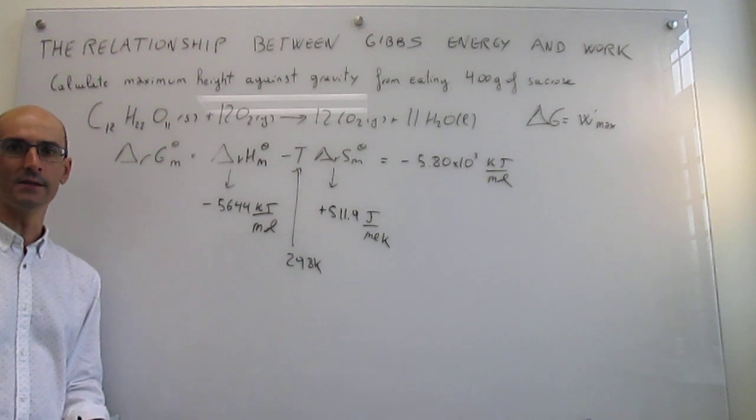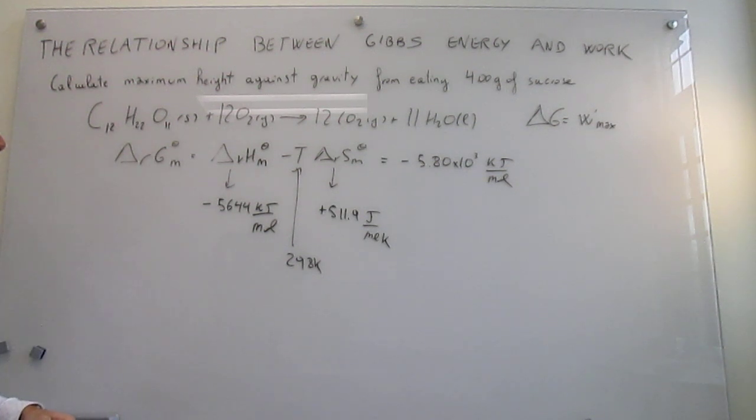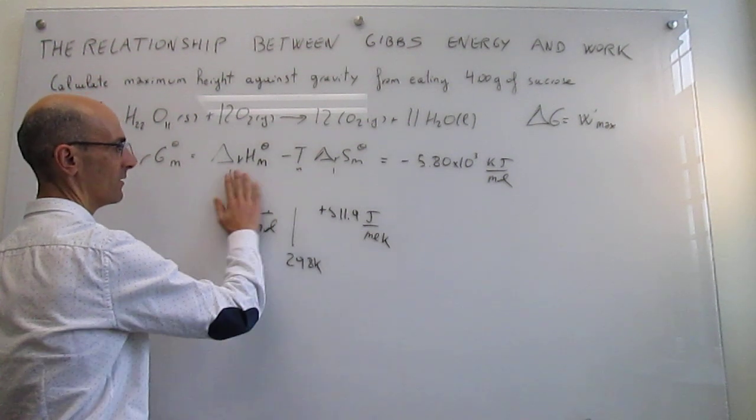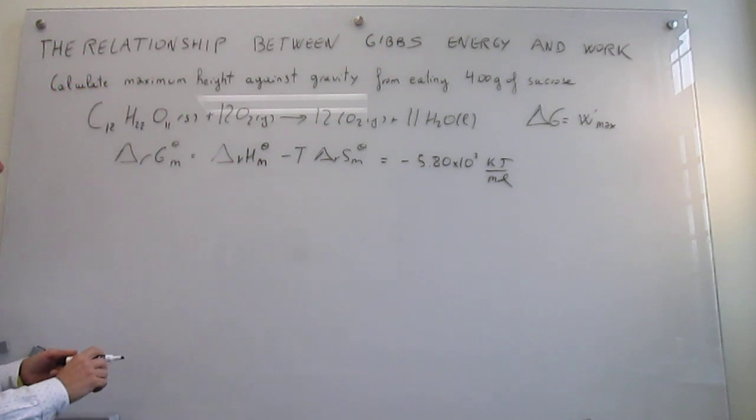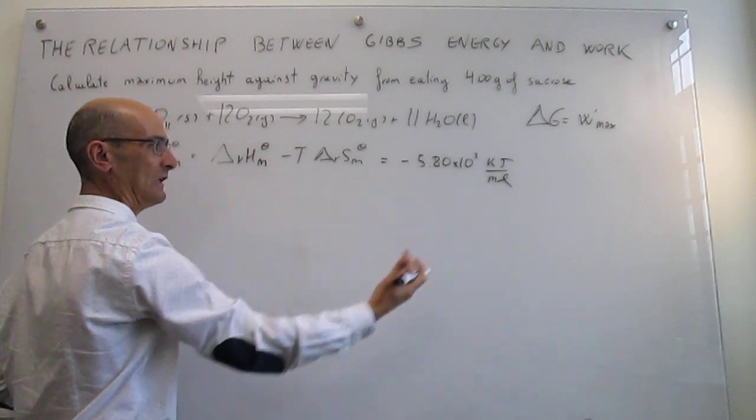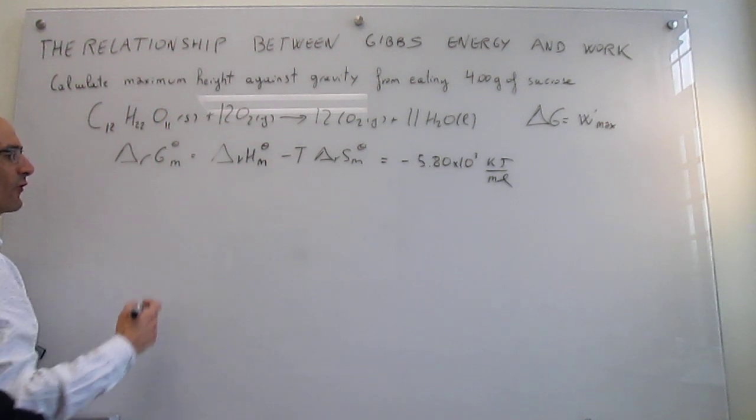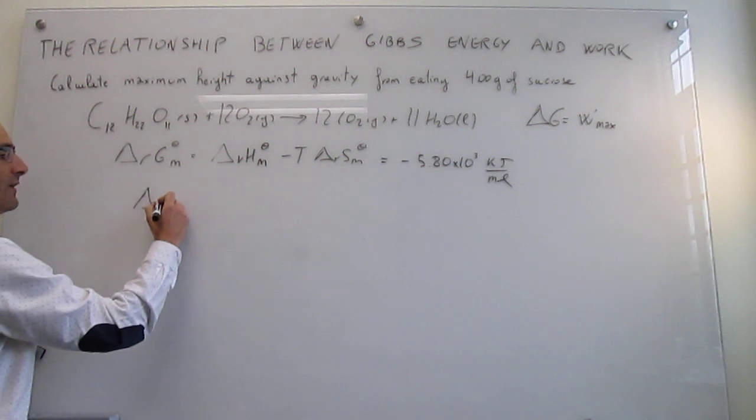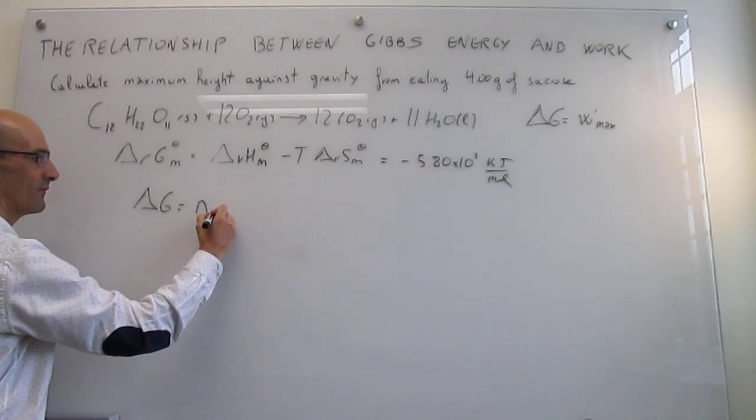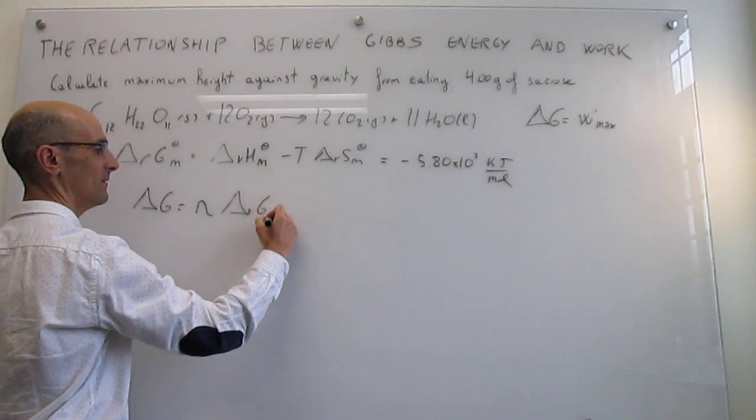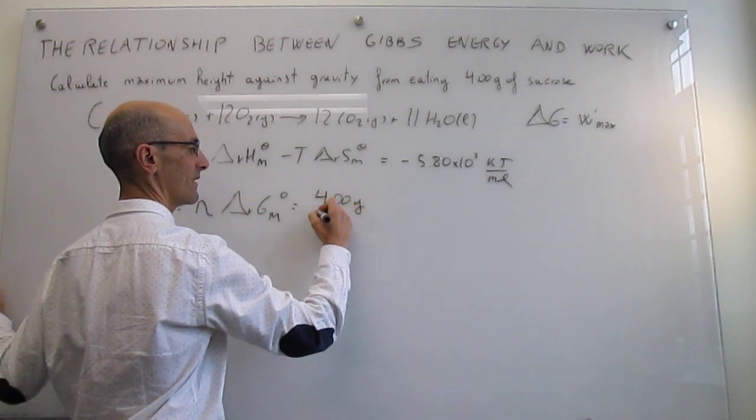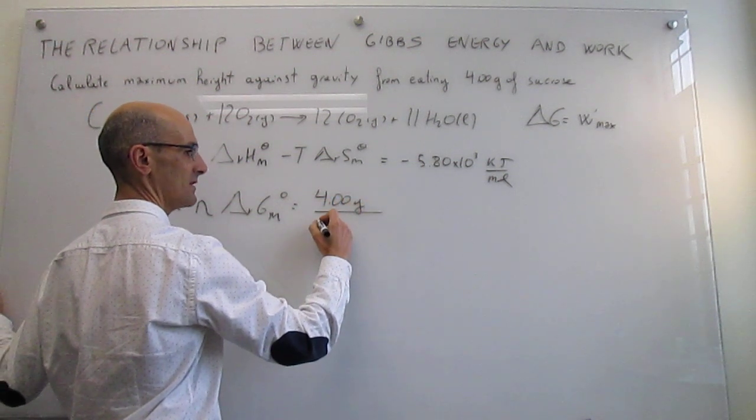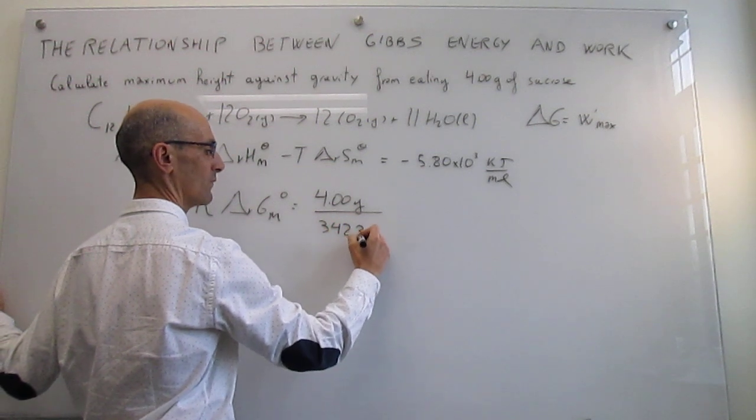Let's continue with the problem. What we have here is the molar reaction Gibbs energy, but we don't have one mole. We instead have only four grams. Let's transform this intensive quantity to an extensive quantity which is for the four grams. ΔG will be simply the number of moles that you have multiplied by ΔrG°m. The number of moles is the four grams of sucrose divided by the molar mass, which is 342.3 grams per mole.